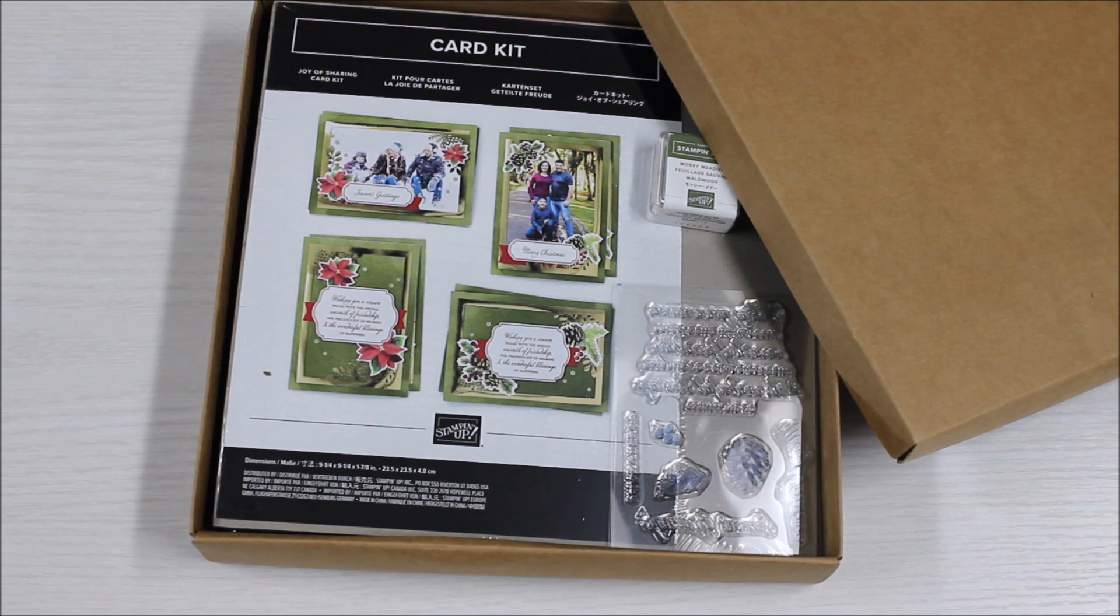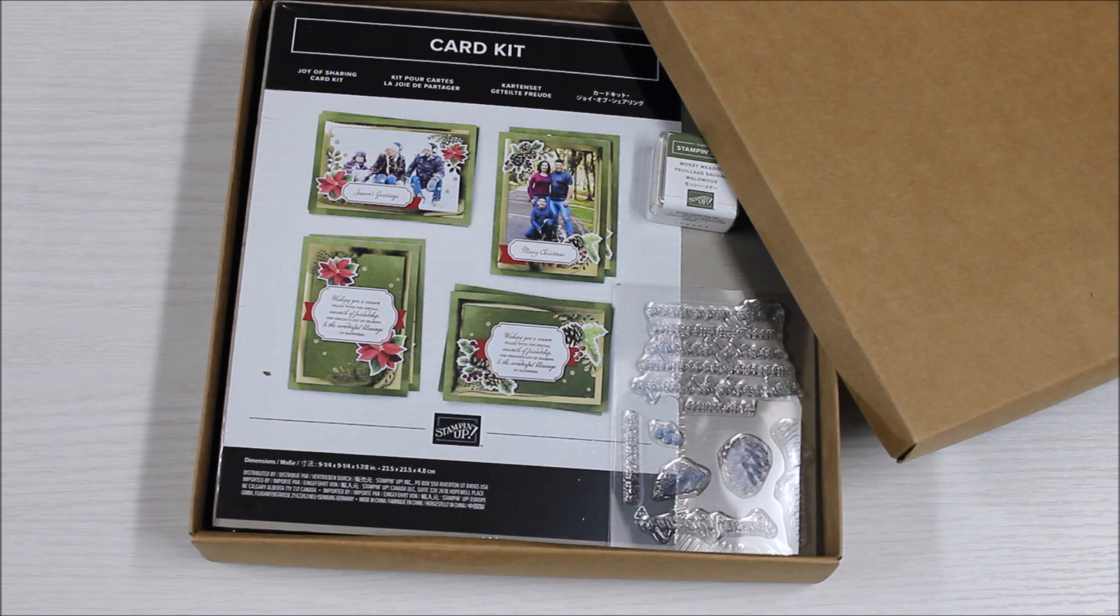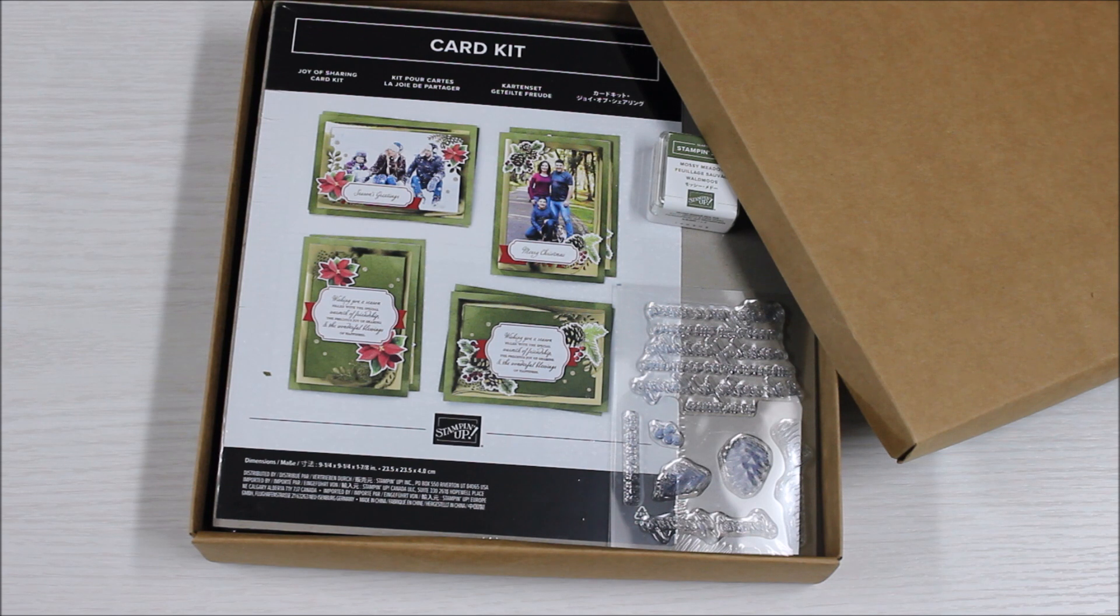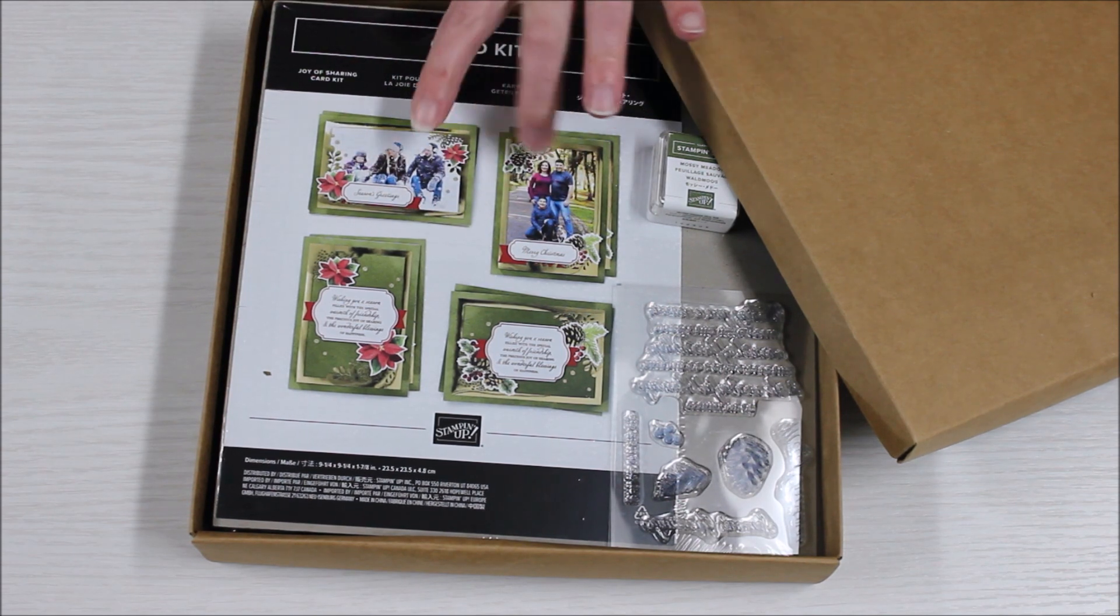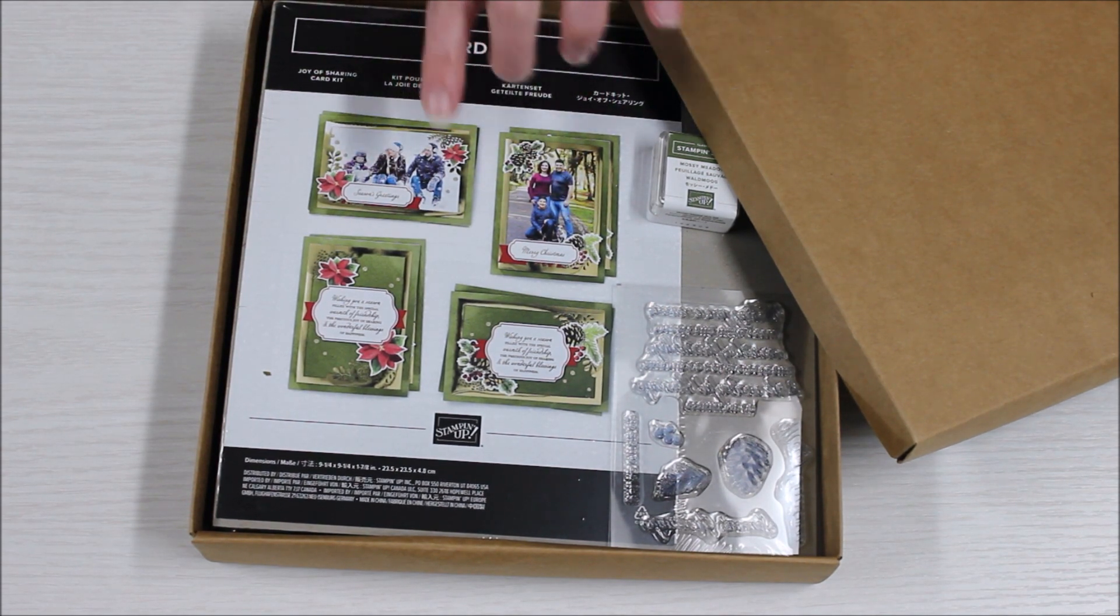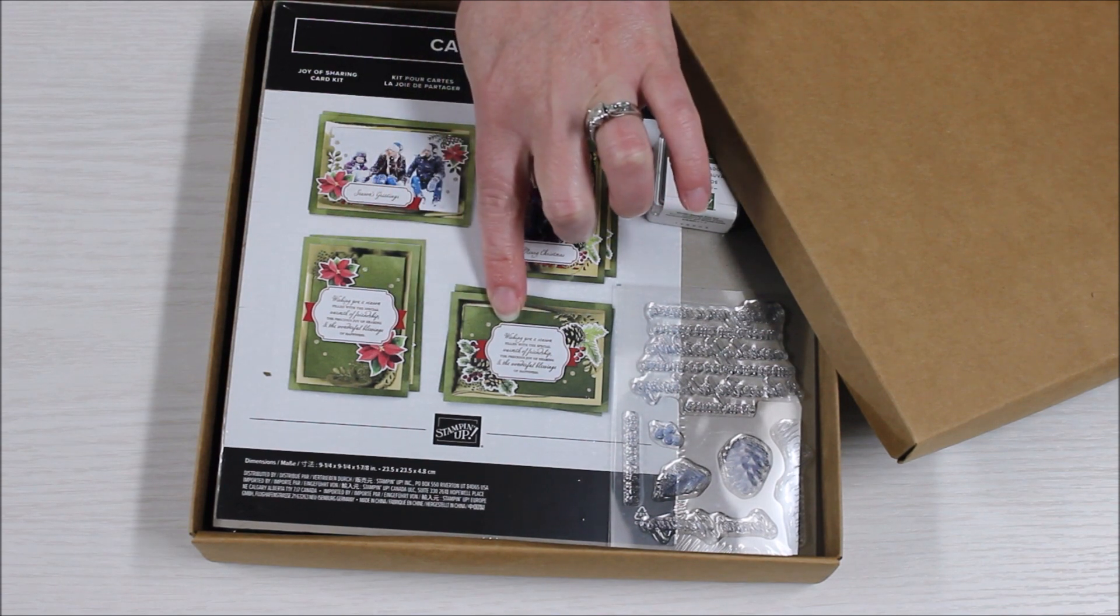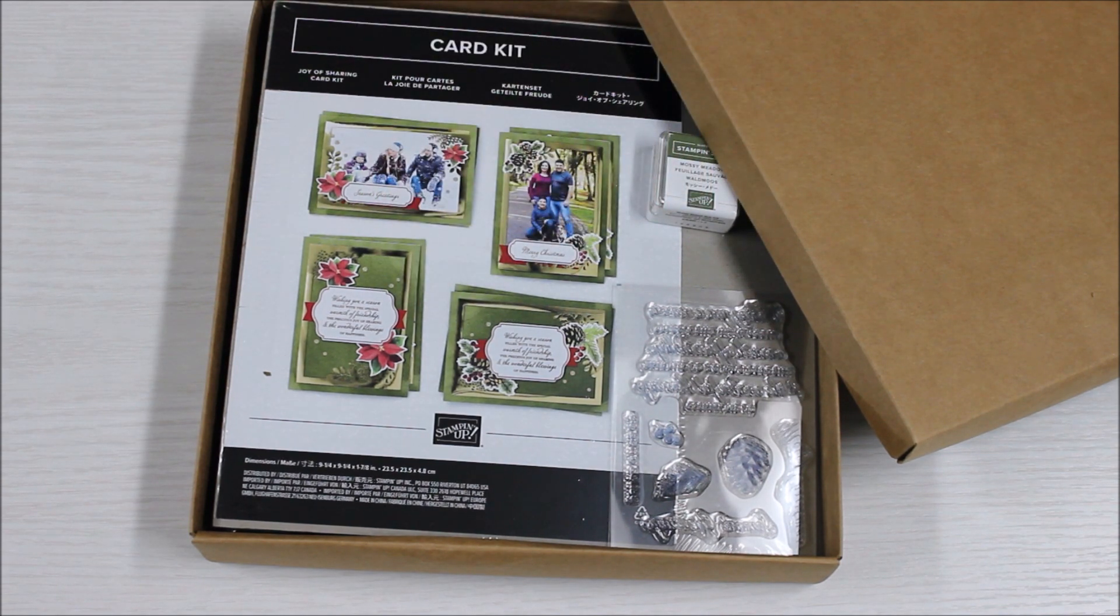I absolutely love all-inclusive kits because anybody can do them since it comes with all the supplies to create the project inside. This card kit makes 15 total cards with coordinating envelopes, and the super cool thing is you can do these cards as a photo card in both portrait and landscape, or as a regular card in both orientations.